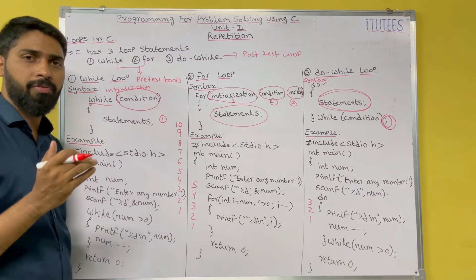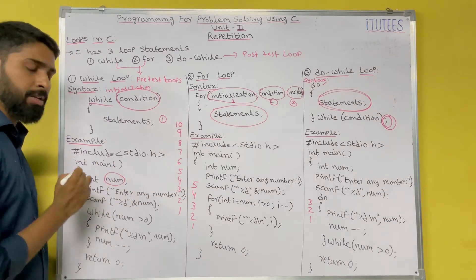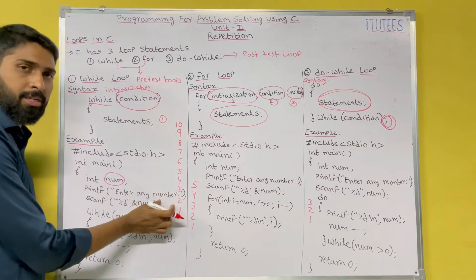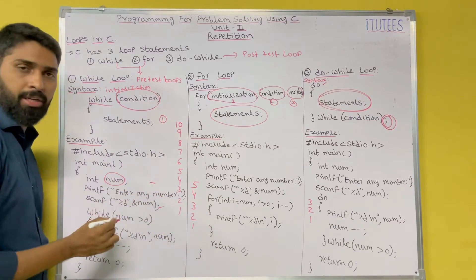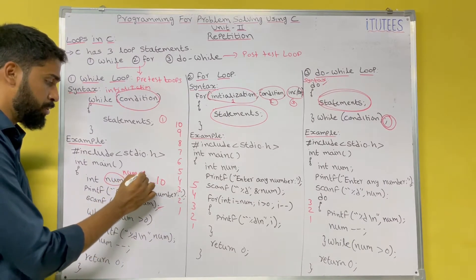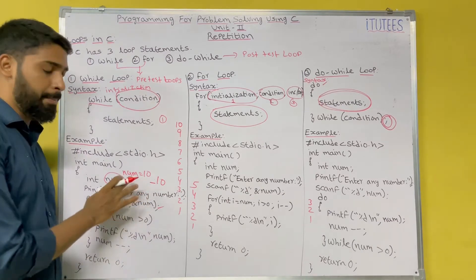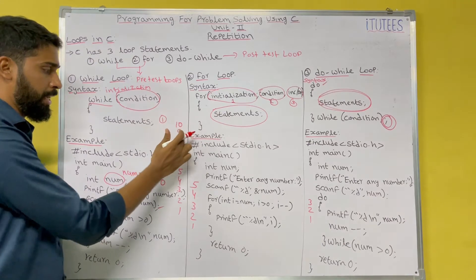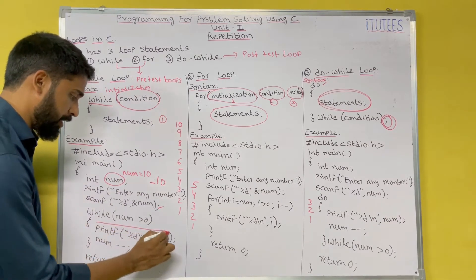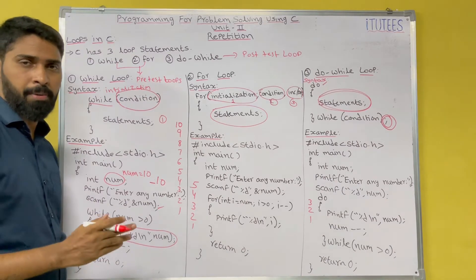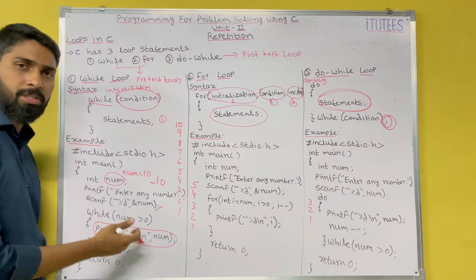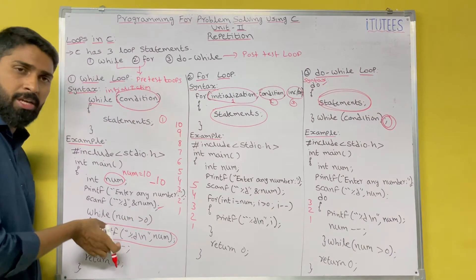Here I am taking one variable NUM and reading the value from the keyboard using scanf. 'Enter any number' is displayed on the monitor and the cursor waits. If I enter 10, the value 10 is stored in NUM. The next instruction is the while loop. I want to execute the print instruction repeatedly, so I put it inside a while loop.